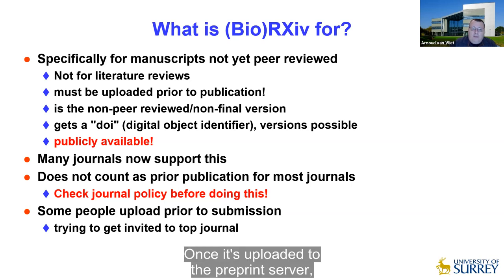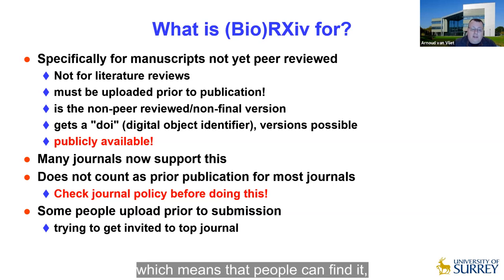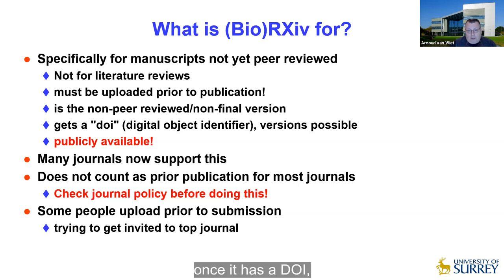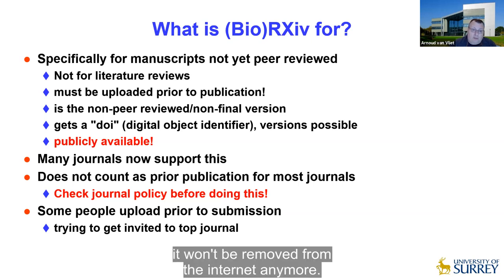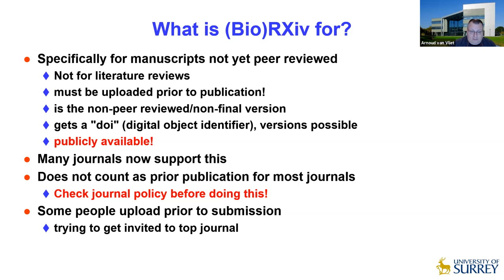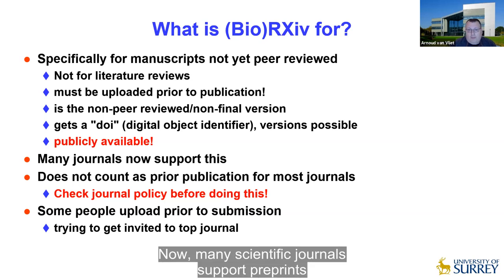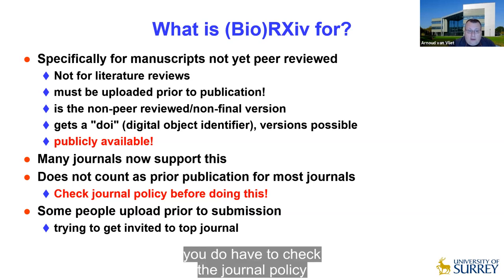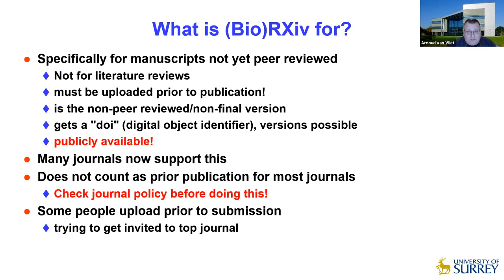Once it's uploaded to the preprint server it gets a DOI — a digital object identifier — which means people can find it, and there may be multiple versions of it. Once it has a DOI it's publicly available, and remember, once something is on the internet it won't be removed and you've lost control of who can access it. Journals were initially skeptical, counting it as prior publication, but there has been a shift and many scientific journals now support preprints. You do have to check the journal policy before uploading, because some journals still do not allow it, meaning you cannot submit to those journals after uploading a preprint.